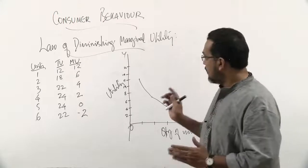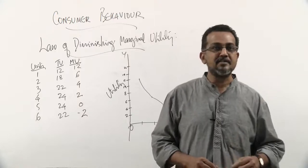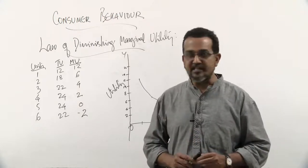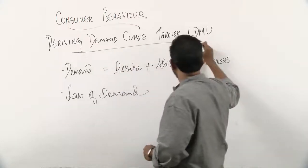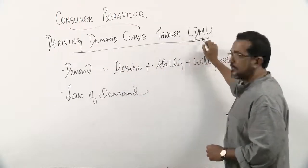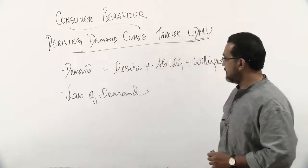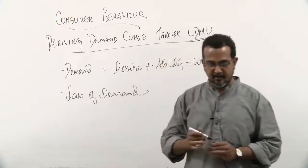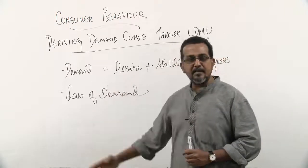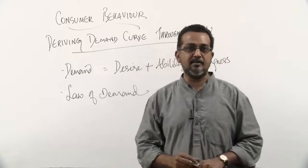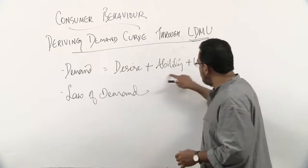Having understood the law of diminishing marginal utility, let's proceed to understand how it is applied in the derivation of a demand curve. Now, what exactly is demand? Demand has a specific meaning in economics — demand does not simply mean desire to possess a commodity.